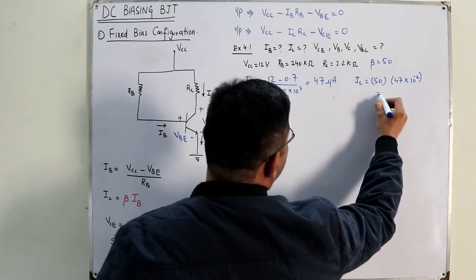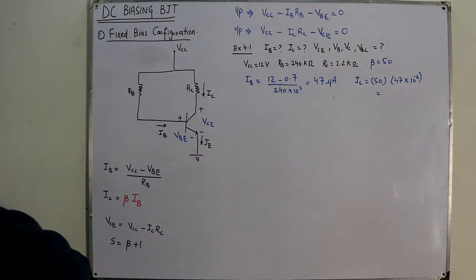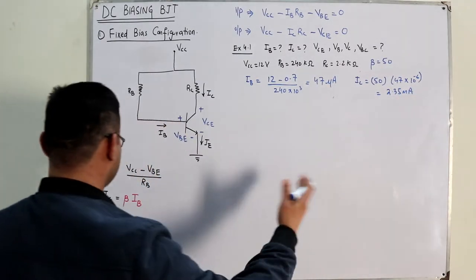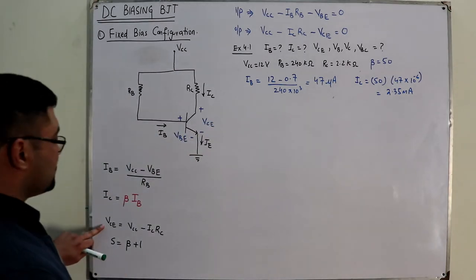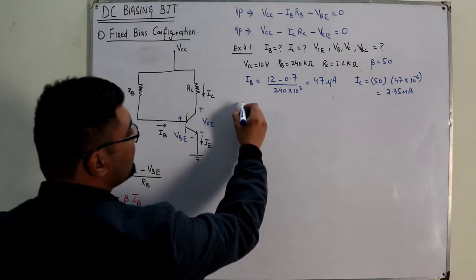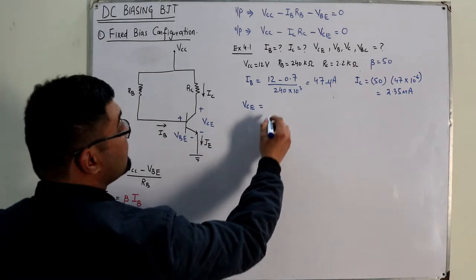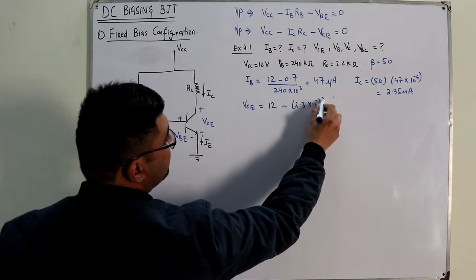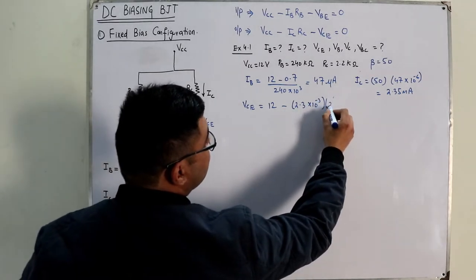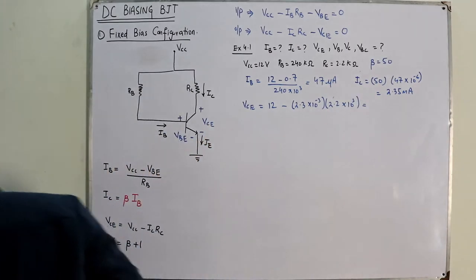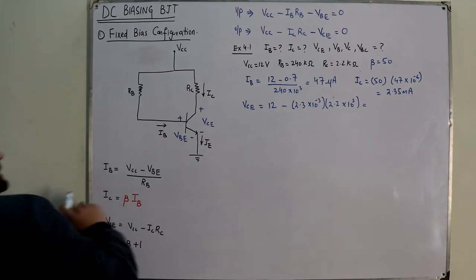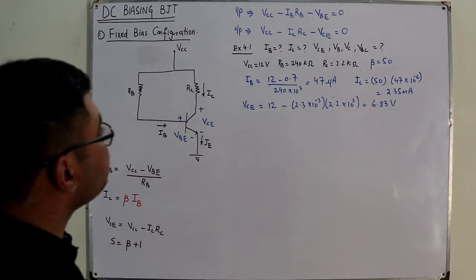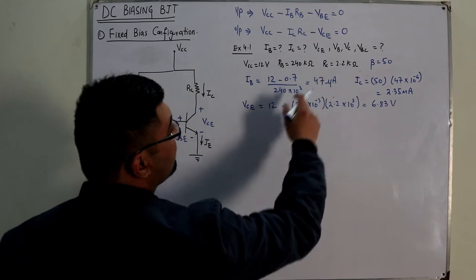IC comes out to be 2.35 milli-amperes. Then VCE equals VCC minus IC·RC: 12 minus 2.35 milli times 2.2 kilo-ohms gives VCE approximately 6.83 volts. This is greater than 0.2 volts, so the transistor is in the active region — it is acting as an amplifier.